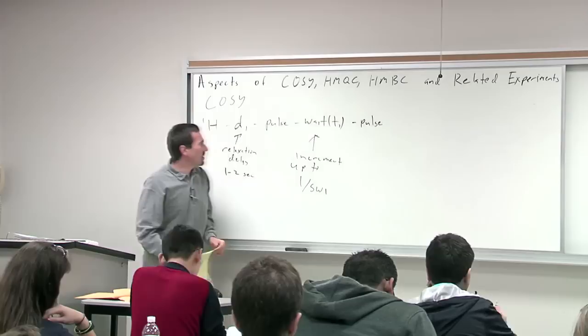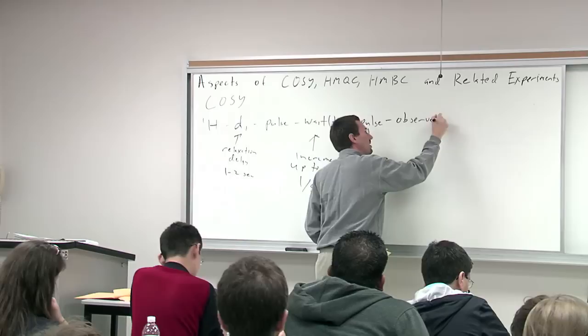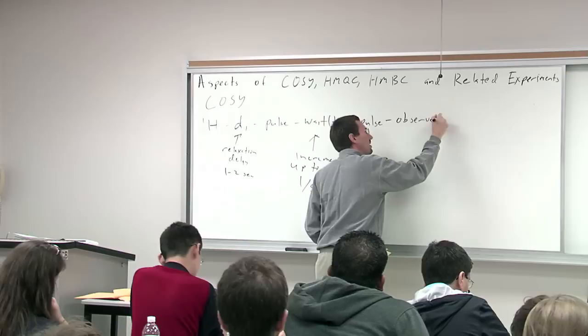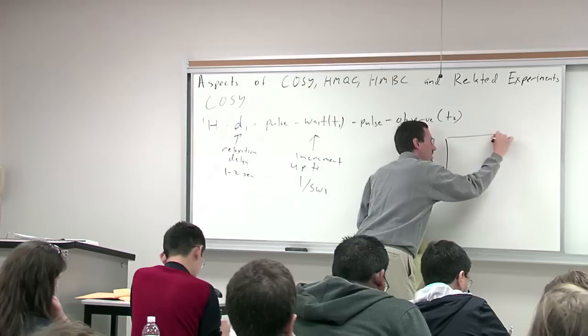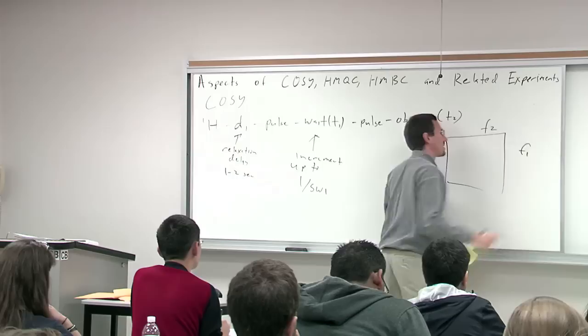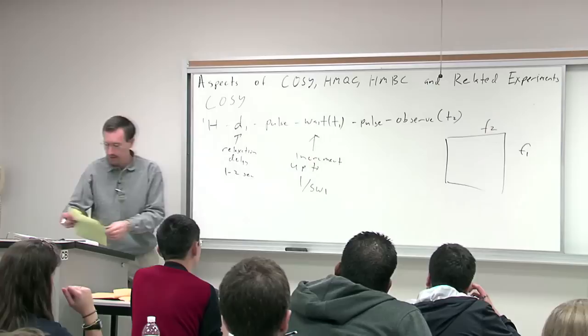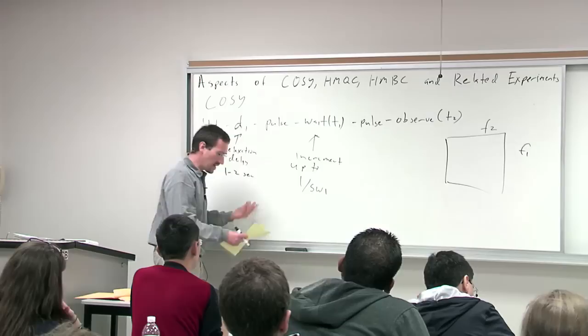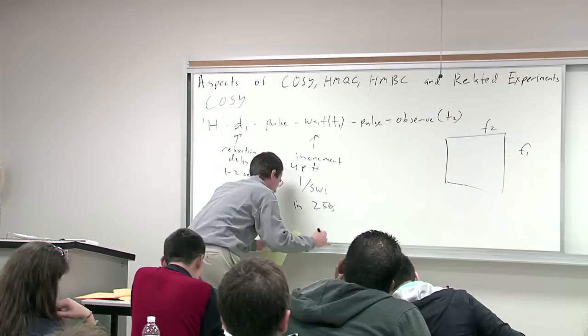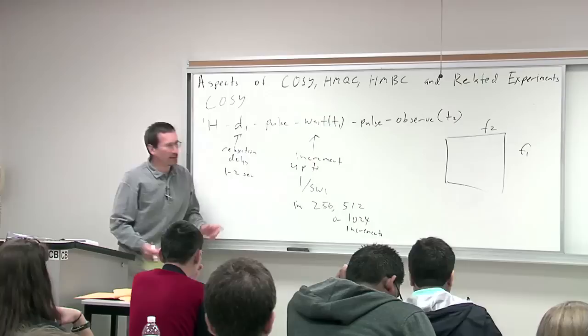Like most 2D experiments, the general gist is: pulse, wait, pulse, observe — sometimes with multiple pulses. When you Fourier transform you get your 2D spectrum; this is the F2 axis, and this is the F1 axis. The real axis for each FID is the F2 axis, and the F1 axis comes from your incremented time. You typically increment in powers of 2 — usually 256, 512, or 1024 increments.